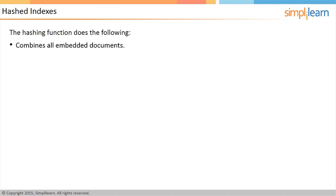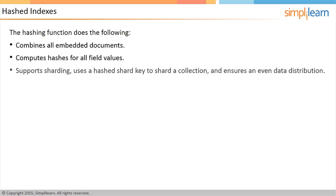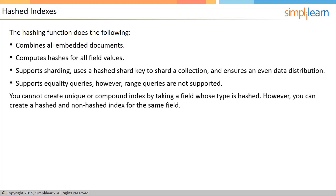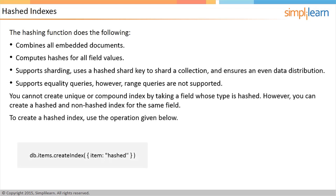The hashing function combines all embedded documents and computes hashes for all field values; however, it does not support multi-key indexes. Hashed indexes support sharding by using a hashed shard key to shard a collection, ensuring an even distribution of data. MongoDB uses hashed indexes to support equality queries, but range queries are not supported. You cannot create a unique or compound index on a field whose type is hashed. However, you can create both a hashed and a non-hashed index for the same field, and MongoDB uses the scalar index for range queries. You can create a hashed index using the operation shown on the screen, which creates a hashed index for the items collection on the item field.